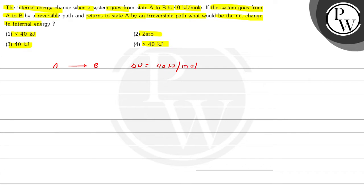And if the system goes from A to B by a reversible path, it goes from a reversible path and returns to irreversible path.